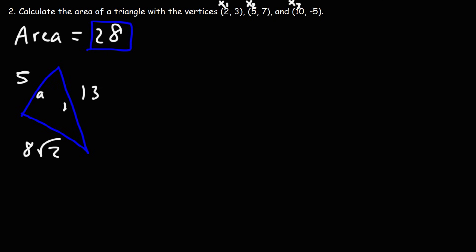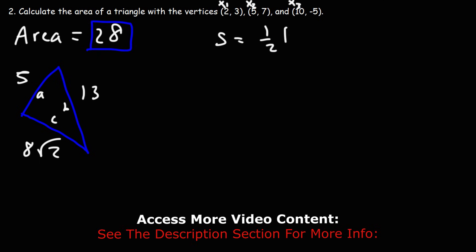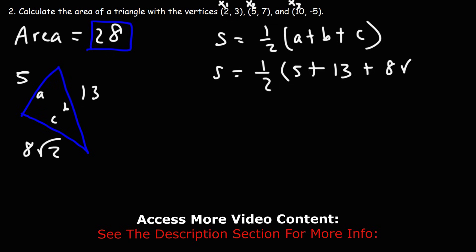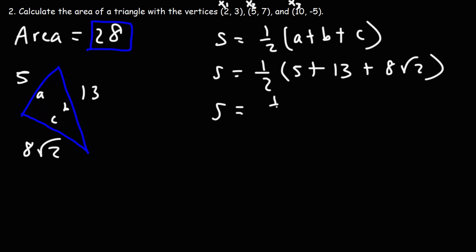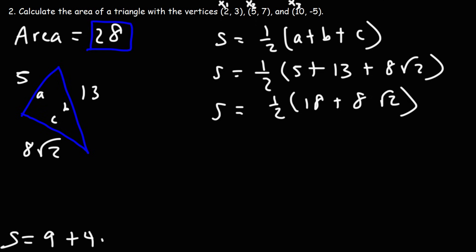Let's call the sides A=5, B=13, and C=8 root 2. Using Heron's formula, we first calculate S, which is half of the perimeter. So S equals one-half of (5 plus 13 plus 8 root 2). Five plus 13 is 18, so half of 18 is 9 and half of 8 is 4. The exact value for S is 9 plus 4 root 2, which is approximately 16.657.